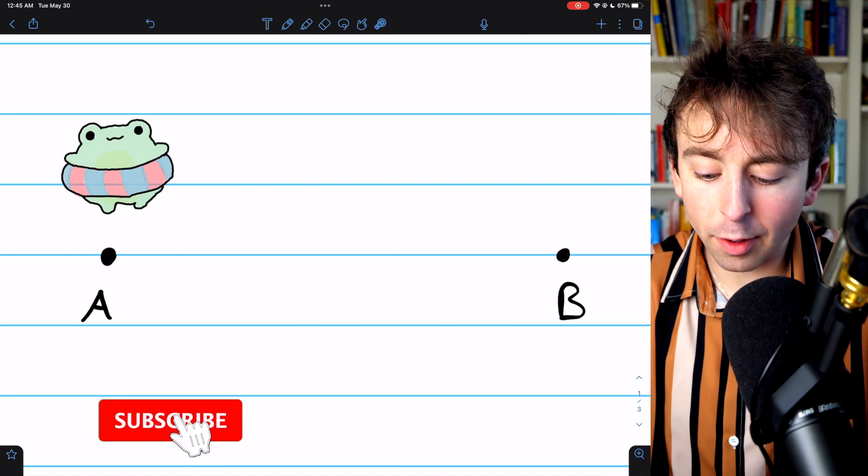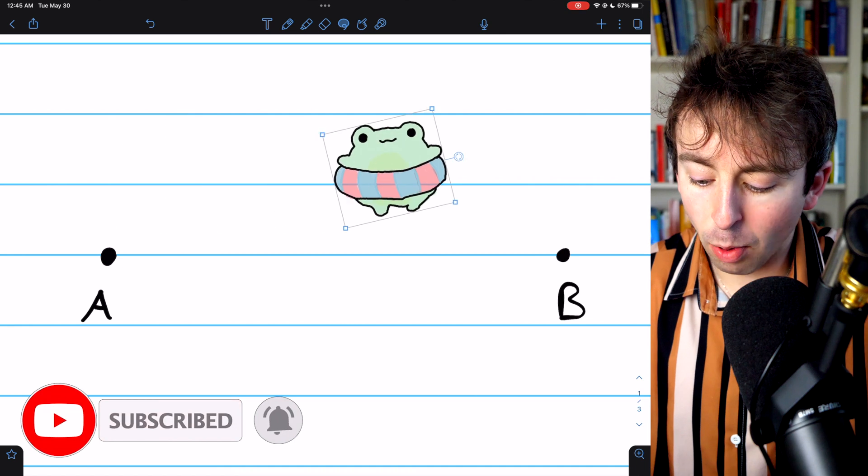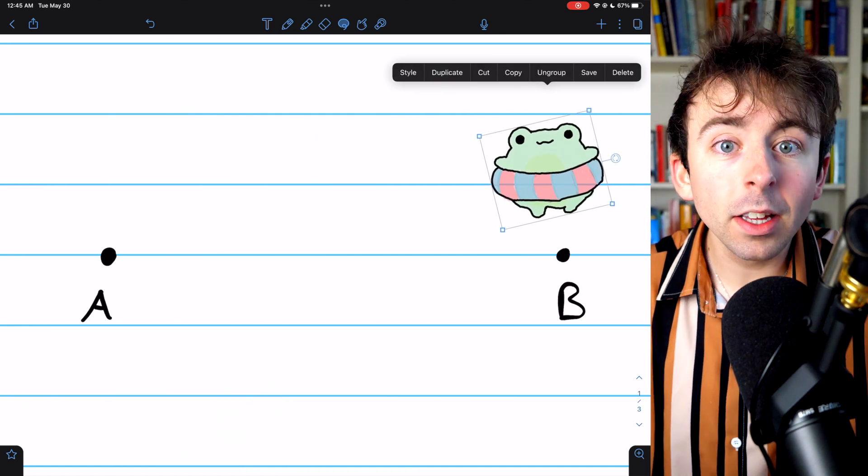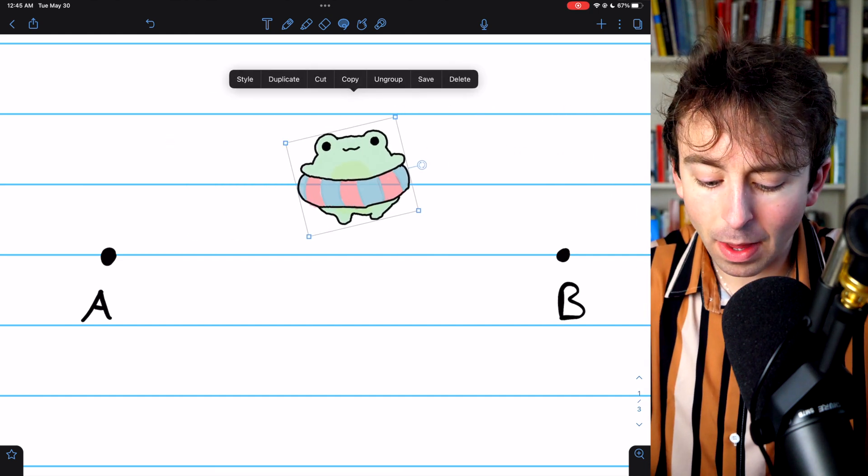Here is a cute little frog in a floaty. If the frog moves from point A to point B, then surely, at some point, the frog must have been at all positions between A and B.